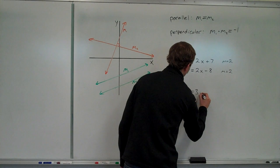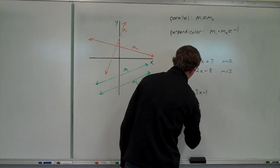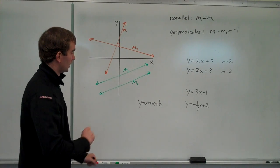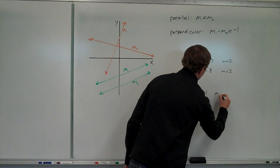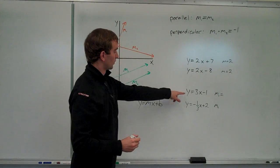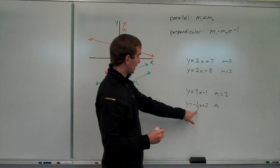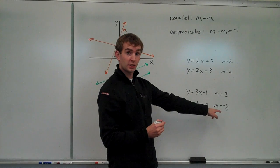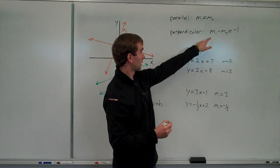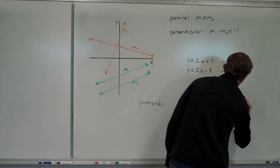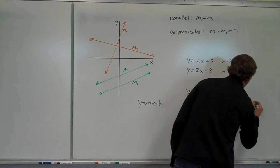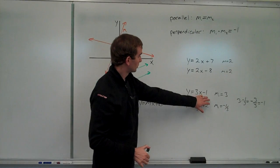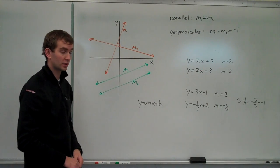Maybe I can do a different one. Say Y equals 3X minus 1 and Y equals negative 1-third X plus 2. I can look at those two lines and figure out the slopes: M1 equals 3, M2 equals negative one-third. Definitely not equal, so not parallel. But let's check if they multiply together to be negative 1: 3 times negative one-third equals negative three over three, or negative 1. So these two lines are perpendicular.